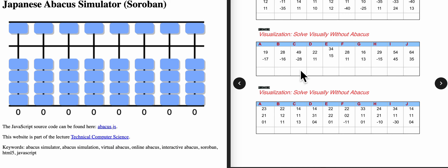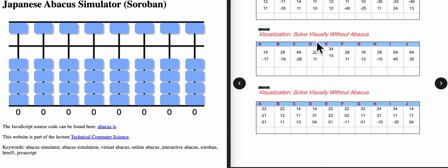Let's do this problem. 49. Minus 28: 2, 5, and at the bottom I had to take away 3, so 8 removed. Now how much you got here? 21. Like this, you have to solve visualization problems.